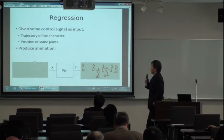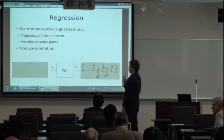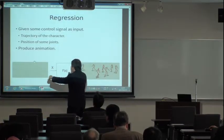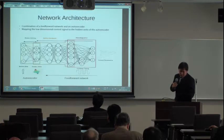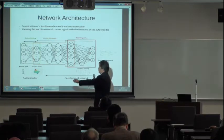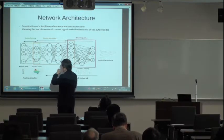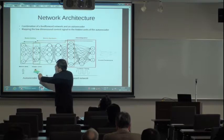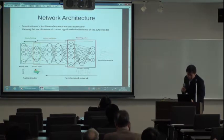Now let me quickly go through the regression part. After the autoencoder, I'm talking about constructing full body motion from a low-dimensional signal. In this case, we draw a line over the ground and try to reproduce the full body motion of the character — something very useful for animators. We generate a neural network for this purpose. All motions are represented in the hidden unit space of the motion manifold, and we can generate motion over this subspace.